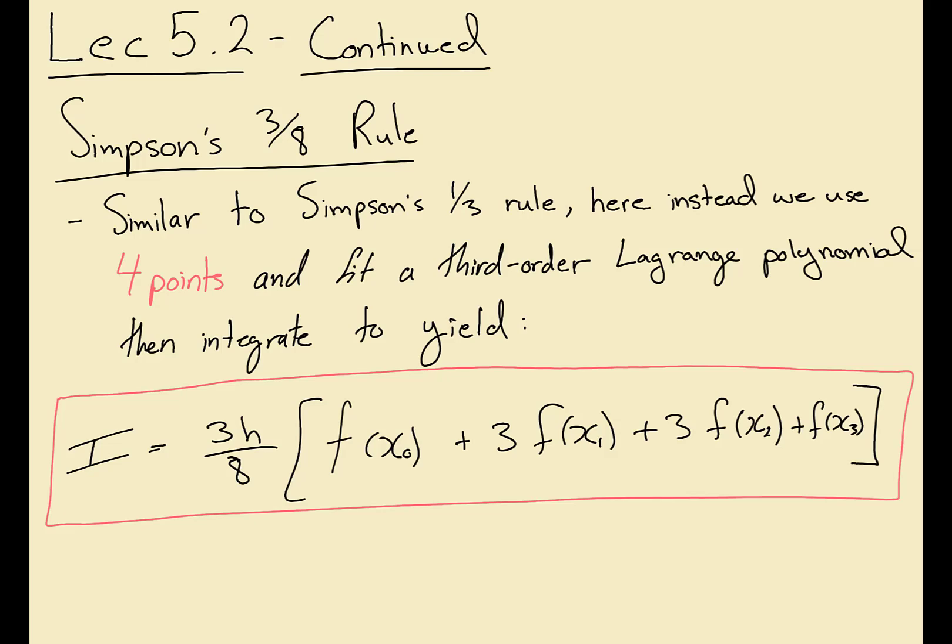The standard equation: the points in the middle are multiplied by three while we use the first point as is and the last point as is. So similar to the trapezoidal rule where we multiplied by two, but here we're multiplying by three for the middle points. Instead of using three points like in one-third, here we're using four points.